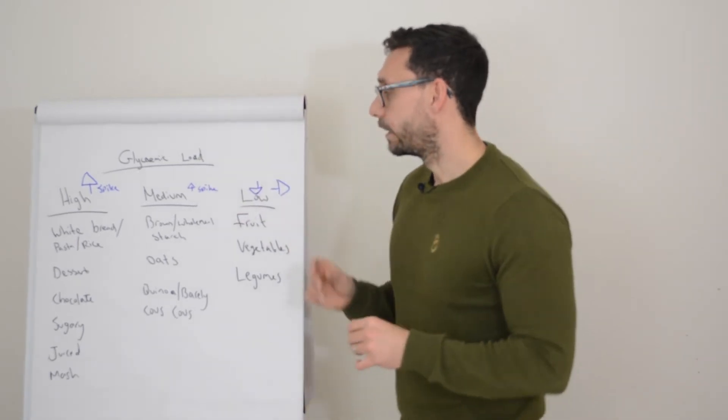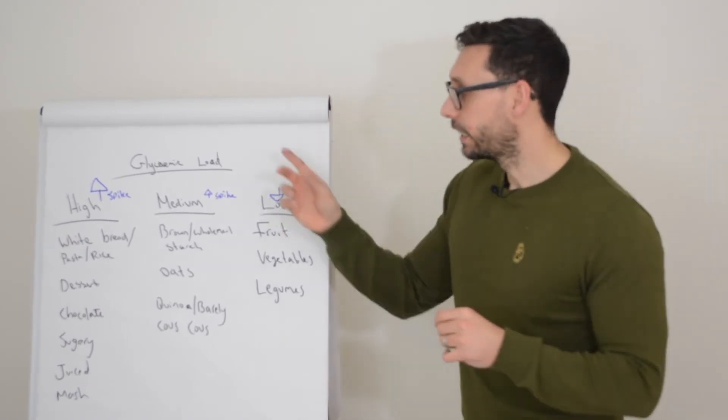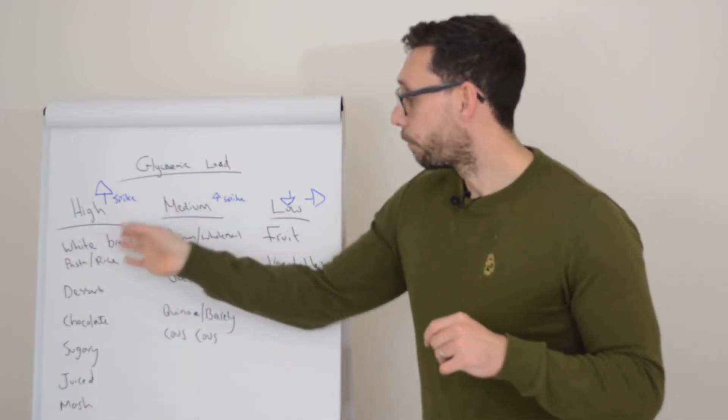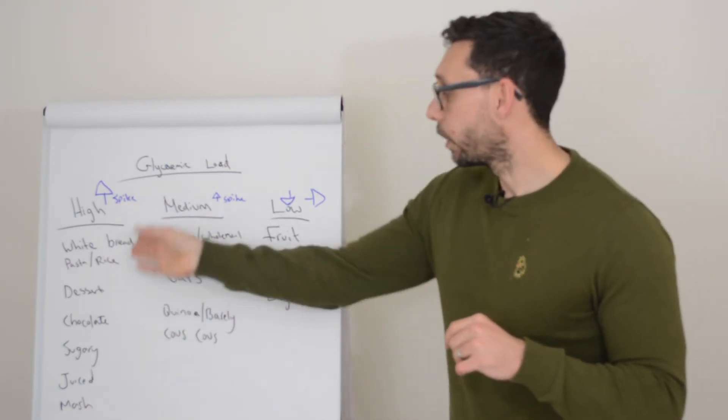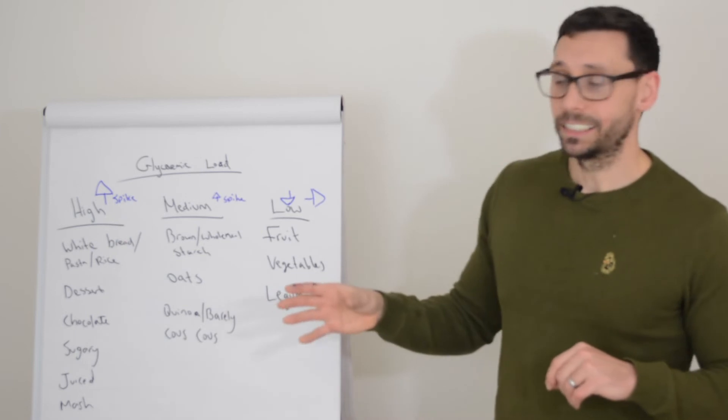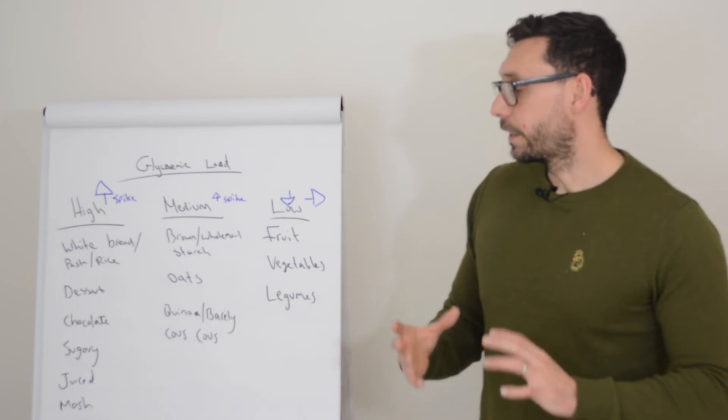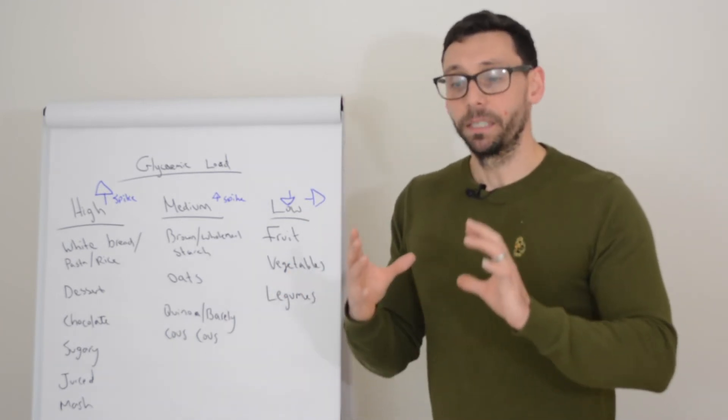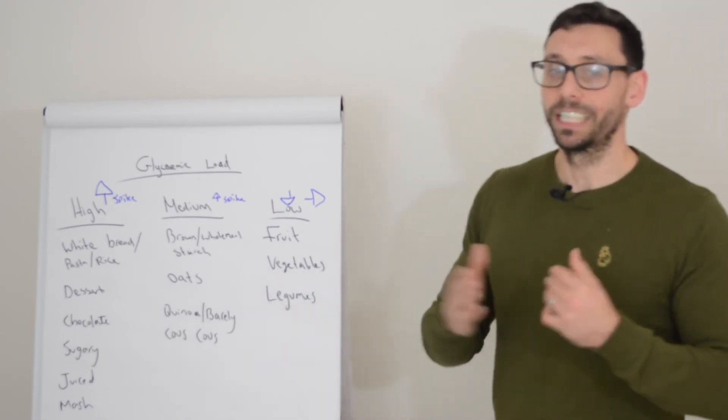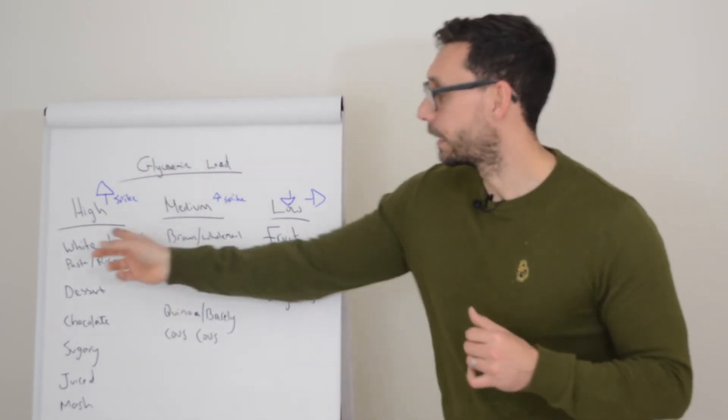So when we start to factor in the carbohydrate content of foods and the glycemic index, the list starts to look more intuitive. High GL foods is any of those processed starchy carbohydrates - white bread, white pasta, white rice, sugary drinks, juice drinks, anything mashed. But now we can start adding in things like dessert, chocolate, because even though they're high fat, which means they're not particularly high GI, they're still very sugary and have a lot of carbohydrates. So that compensates for the fact that they're lower GI and puts them into this high glycemic load category.